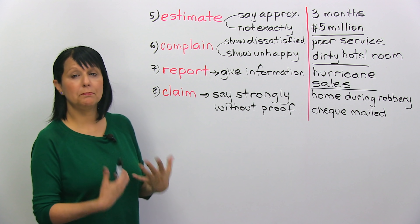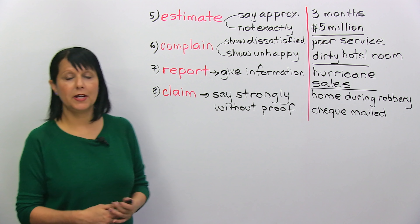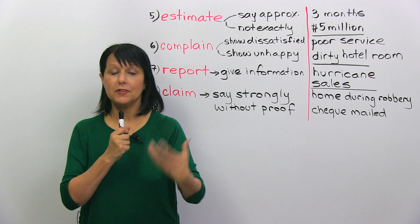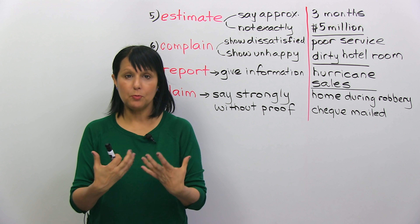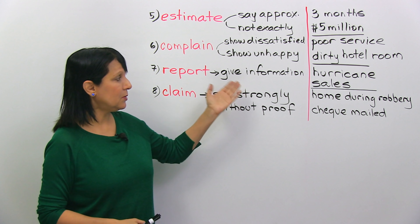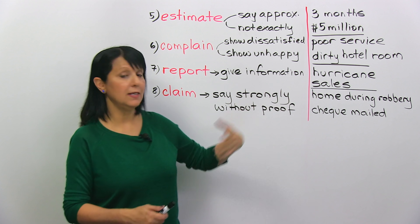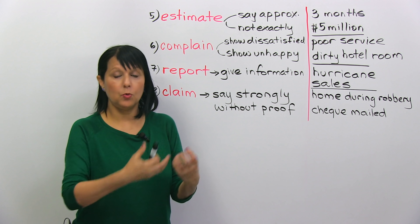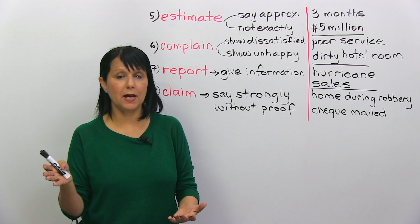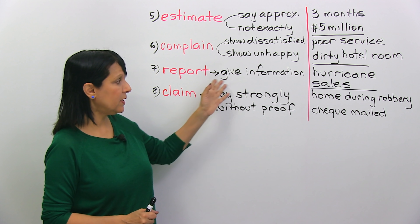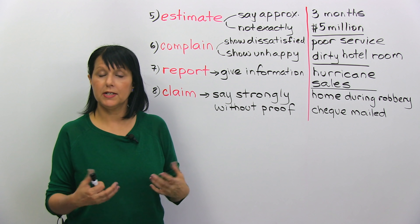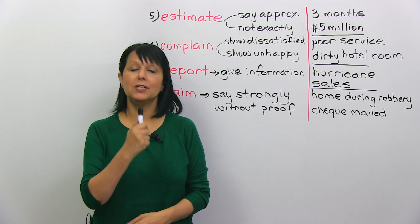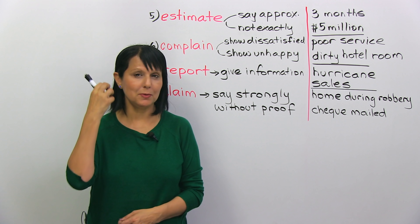Number seven is 'report.' If you watch the news, you know what it means to report. A reporter stands there with a microphone and gives information. So to report means to give information about something. For example, they reported that the hurricane was approaching. You can report something that happened, is happening, or is going to happen. In a business context, they reported that sales had increased in the last quarter.